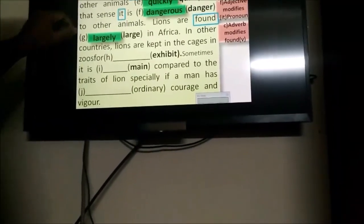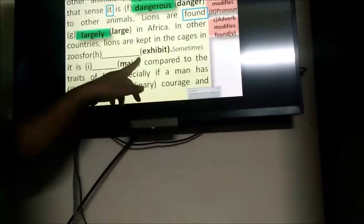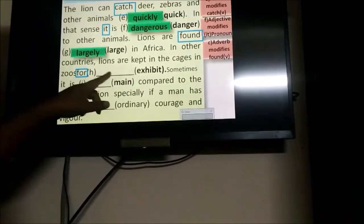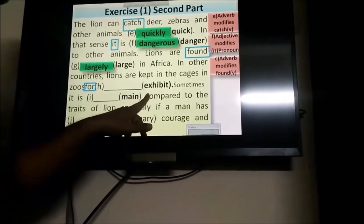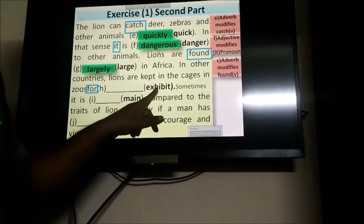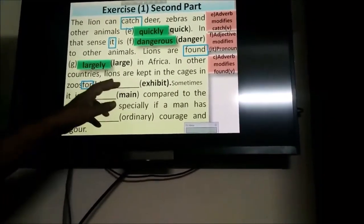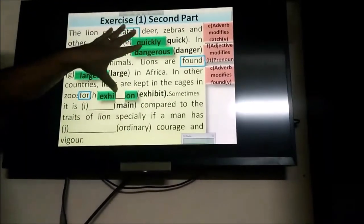In other countries, lions are kept in the cages for exhibit. As we know that after prepositions, the word can be a noun. So, what is the noun of exhibit? Exhibition. I-O-N will be added. So, let's check it out: exhibition.